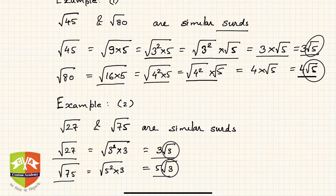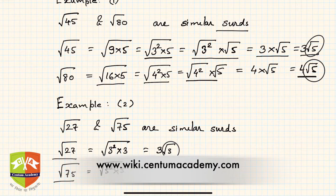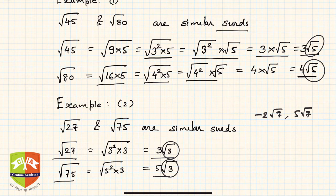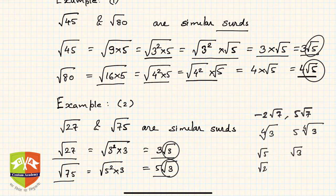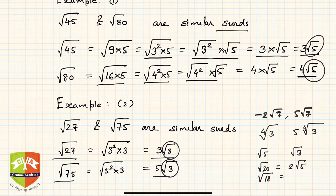More examples: −2√7 and 5√7 are similar. Then the fourth root of 3 and five times the fourth root of 3 are similar, because the irrational parts are the same. Something which is not similar — for example, √5 is never similar to √3. Also, √20 = 2√5, and √18 = 3√2, so √20 is not similar to √18.